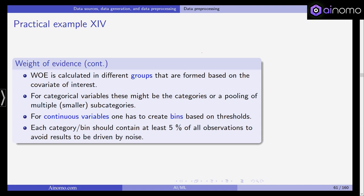For categorical variables, these might be the categories or a pooling of multiple smaller subcategories. For example, in our data we might have income. Every income will most likely be a float number or an integer variable. Everyone has a slightly different income, so you need to pool them to arrive at larger categories and larger pools so that there are enough observations in all of these pools.